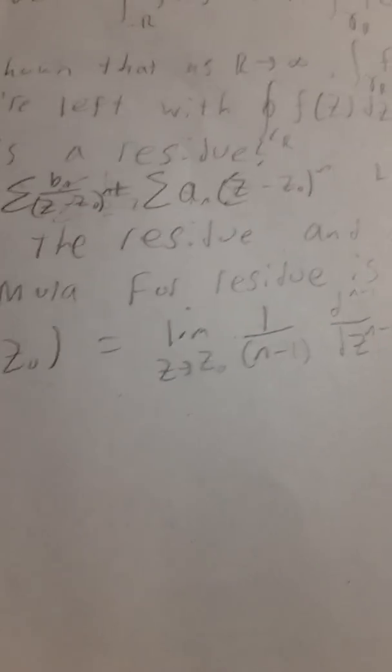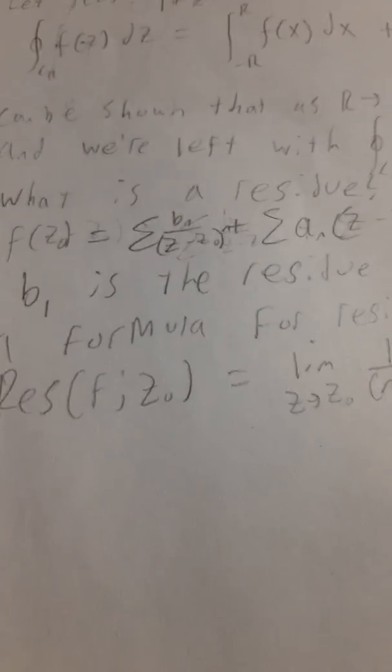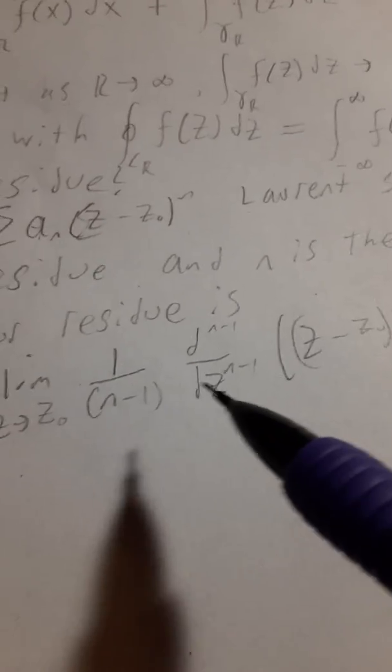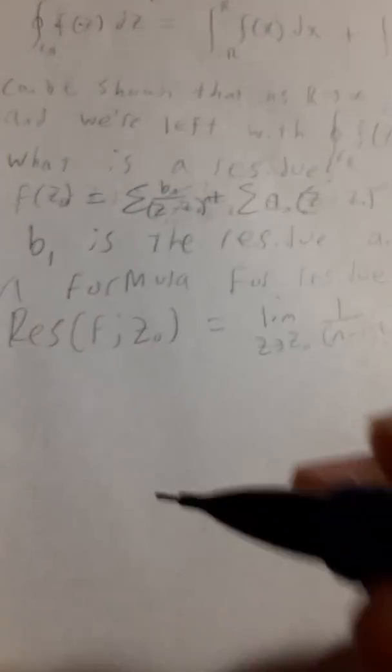Since all of our poles in our complex function are first order, we don't even have to worry about doing any derivatives. Note this should be a factorial. We're just going to have this simplified form. So with my very shaky handwriting, we shall compute the poles first.